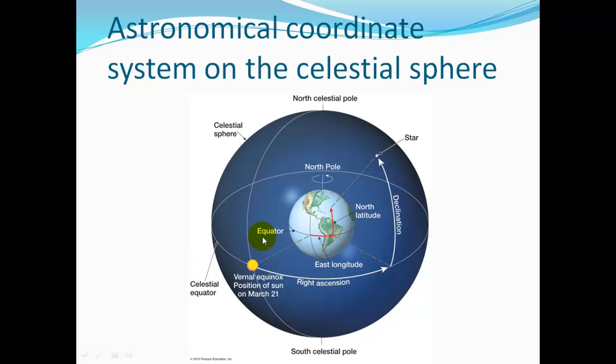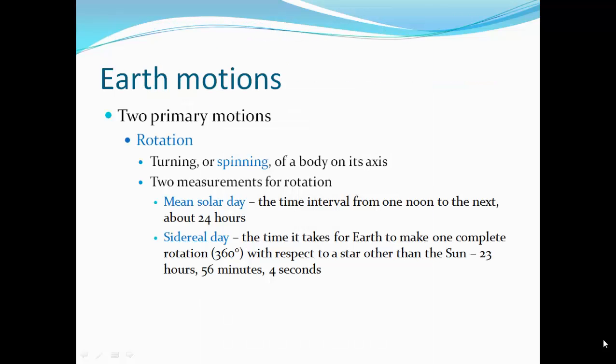Declination is the angular distance north or south of the celestial equator. And right ascension is the angular distance measured eastward along the celestial equator from the position of the vernal equinox. So here we've got our celestial sphere. There's a north celestial pole, south celestial pole. And you look at the distance to the north as you're going up. There's declination. And traveling around to the right, you measure the right ascension. Here's a picture of the vernal equinox, which is March 21st. So you're looking at right ascension from the vernal equinox to get your right ascension value. And then you go up to get the declination and measure your star.